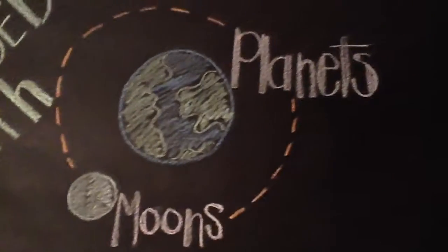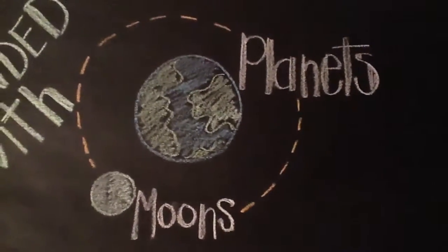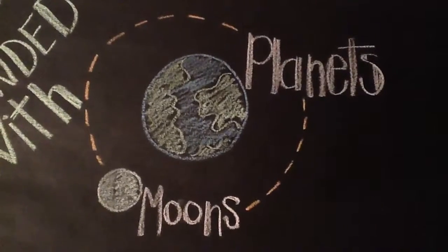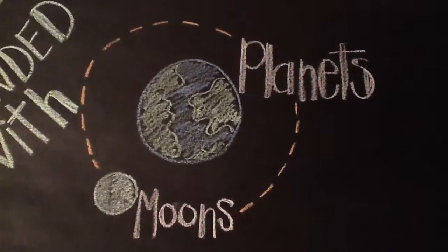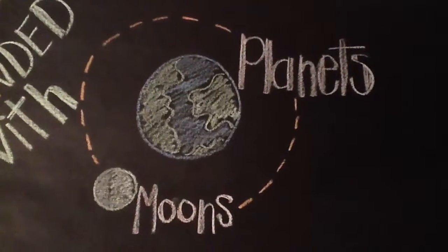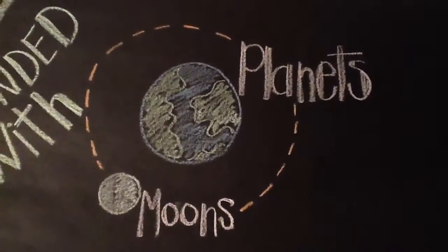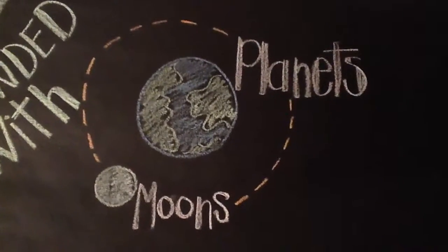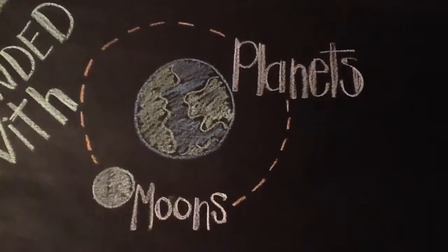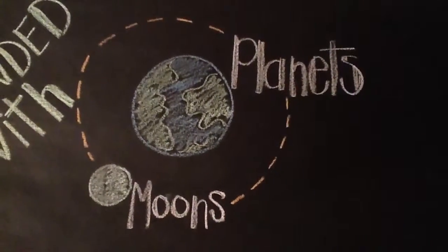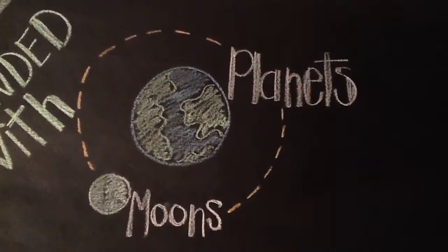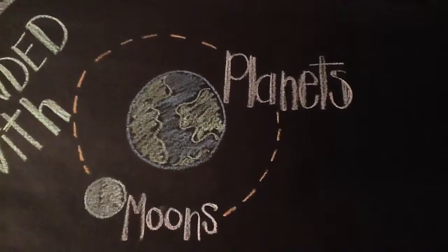Our universe has many different objects in it. One kind of object is a planet. The Earth is one planet, but the universe contains trillions more planets, and they vary greatly. Also, there are moons. Moons are similar to planets, except they're much smaller and orbit around the planets.